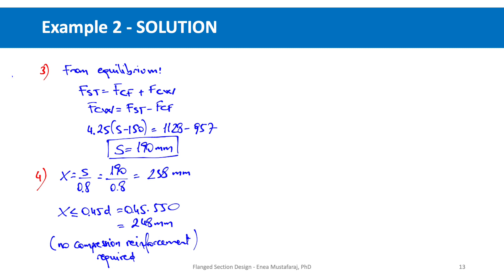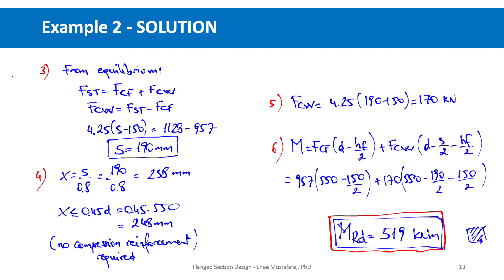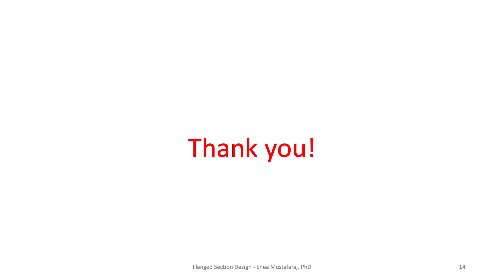Substituting SW (from S = 190 mm) gives FCW = 170 kN. Taking moments about the tension steel, the ultimate moment of resistance is the force in the flange times its lever arm plus the force in the web times its lever arm, giving a total ultimate moment of resistance of 590 kNm. This concludes Example 2 — this video covered flange section design. Thank you and see you in the next videos.